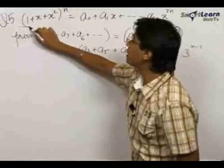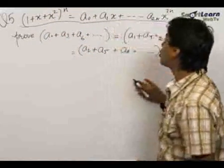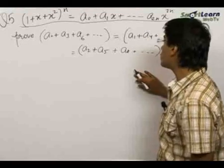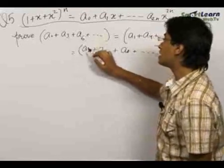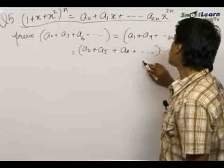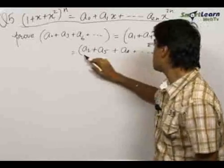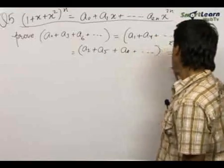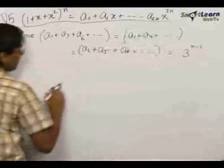We are given with an expression (1 + x + x²)^n = a₀ + a₁x + a₂x² up to a₂ₙx^(2n). And we need to prove that a₀ + a₃ + a₆ + ... = a₁ + a₄ + a₇ + ... = a₂ + a₅ + a₈ + ... = 3^(n-1).